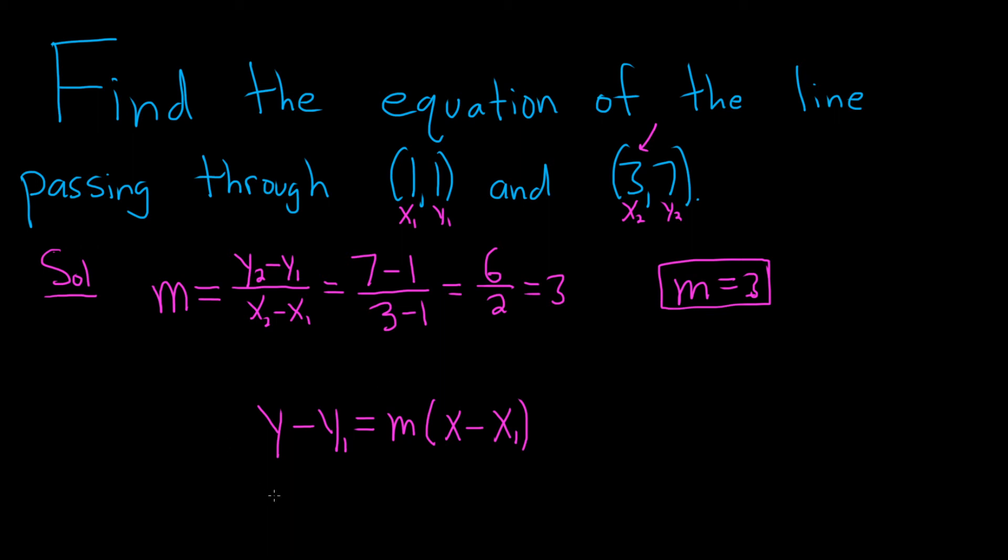Okay, so now we just plug everything in. So let's see. So our y1 is 1, so it'll be y minus 1 equals, and our m is 3. So 3 times, and then looks like x minus 1 as well. So you could leave it like this.